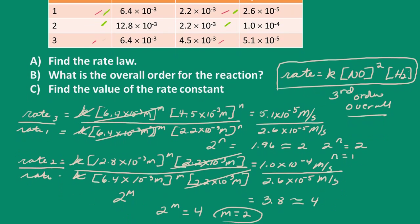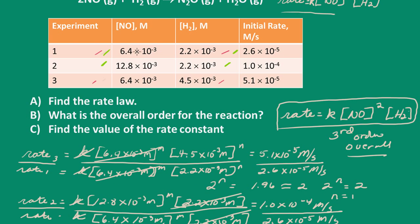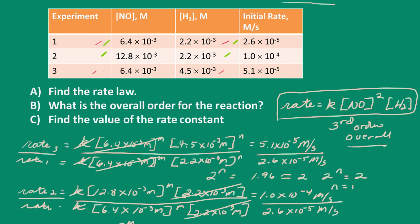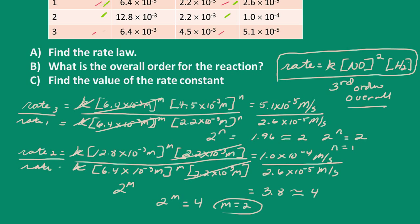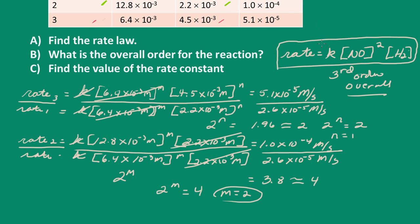You can see that you don't really need to go through all of this math. For example, looking at experiments 1 and 2, the concentration of nitrogen monoxide is doubled while hydrogen is kept constant, and the initial rate quadruples — that corresponds to second order. So we have the overall order for the reaction: third order. Now we're asked to find the value of the rate constant. We have our rate law, so let's solve for K.